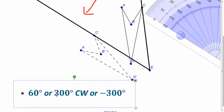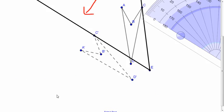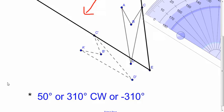So the answer could just be 50 degrees. Oh, that's wrong. Hold on a sec. Okay, sorry about that. 50 degrees or 310 degrees clockwise or negative 310 degrees.